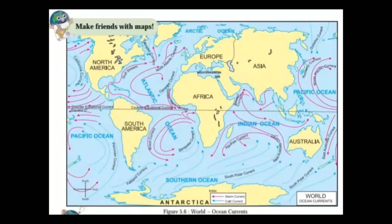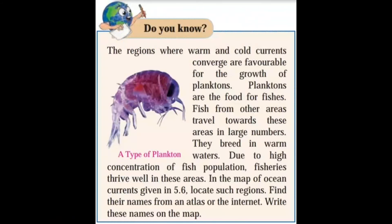See figure 5.6. When an ocean current flows from the frigid to the torrid zone, it reduces the temperature of the coast in the torrid zone. The regions where warm and cold currents converge are favourable for the growth of planktons. Planktons are the food for fishes. Fish from other areas travel towards these areas in large numbers. They breed in warm waters due to high concentration of fish population. Fisheries thrive well in these areas. In the map of ocean currents given in 5.6, locate such regions. Find their names from an atlas or the internet. Write the names on the map.